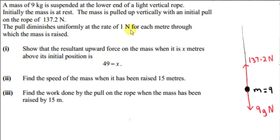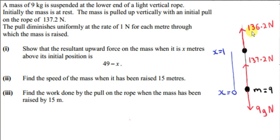The pull diminishes uniformly at the rate of 1 Newton for each meter through which the mass is raised. Let's suppose that the initial position is 0, referred to as x. So at t equals 0, x is 0. If the mass has been raised by 1 meter, the upward pull is 137.2 minus 1 Newtons, that's 136.2. The pull diminishes by 1 Newton for each meter raised. The weight of the particle never changes — it's always 9g vertically down.